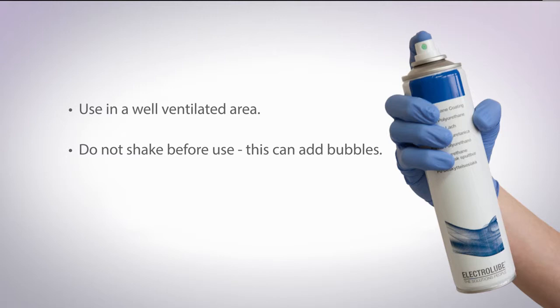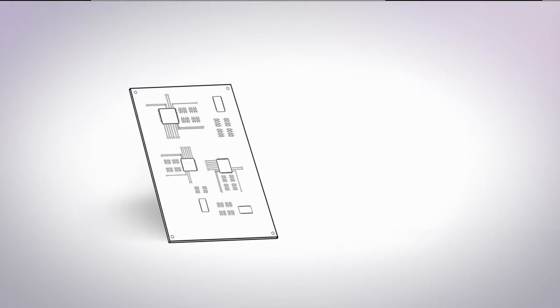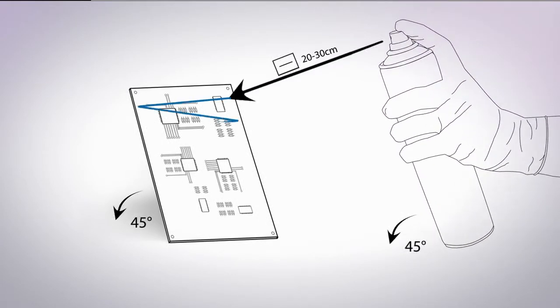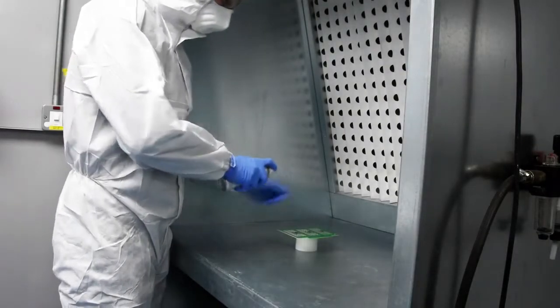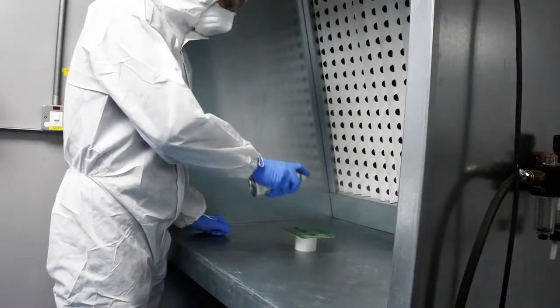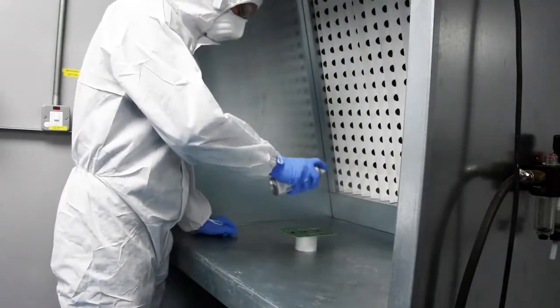Do not shake a coating can before use as this can add bubbles to the mixture which can be transferred to the board. The board should be at 45 degrees to the can and around 20 to 30 centimetres away. Spray the board in a continuous steady Z motion, coating evenly. The board should be rotated 90 degrees and the coating applied again using the same motion, and the board rotated again until you have rotated the board a full 360 degrees.